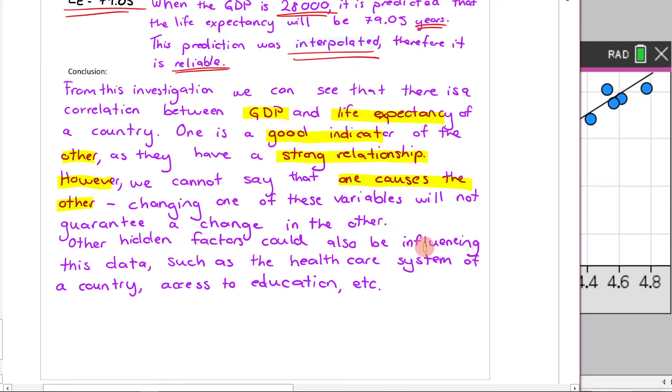And now we're going to talk about a conflating factor here. So other hidden factors could also be influencing this data, such as the healthcare system of a country and access to education. So just because you've got a high GDP doesn't necessarily mean, or to put it another way, having a high GDP does not cause a high life expectancy. There are other hidden factors here. And that is countries with a high GDP tend to have better healthcare systems and better access to education. So that is causing a high life expectancy. It's not purely the GDP. You could find an example of a country with an extremely high GDP with a low life expectancy. And that's because maybe they don't have the healthcare system and access to education. So it's just talking about that correlation does not equal causation. Give me some factors that might explain what's going on here.